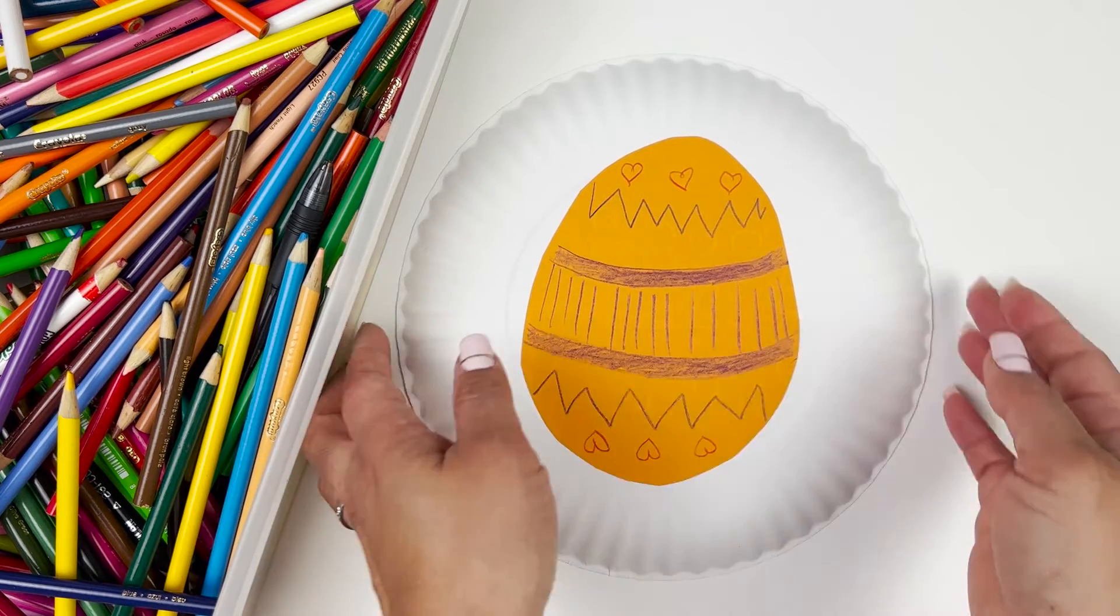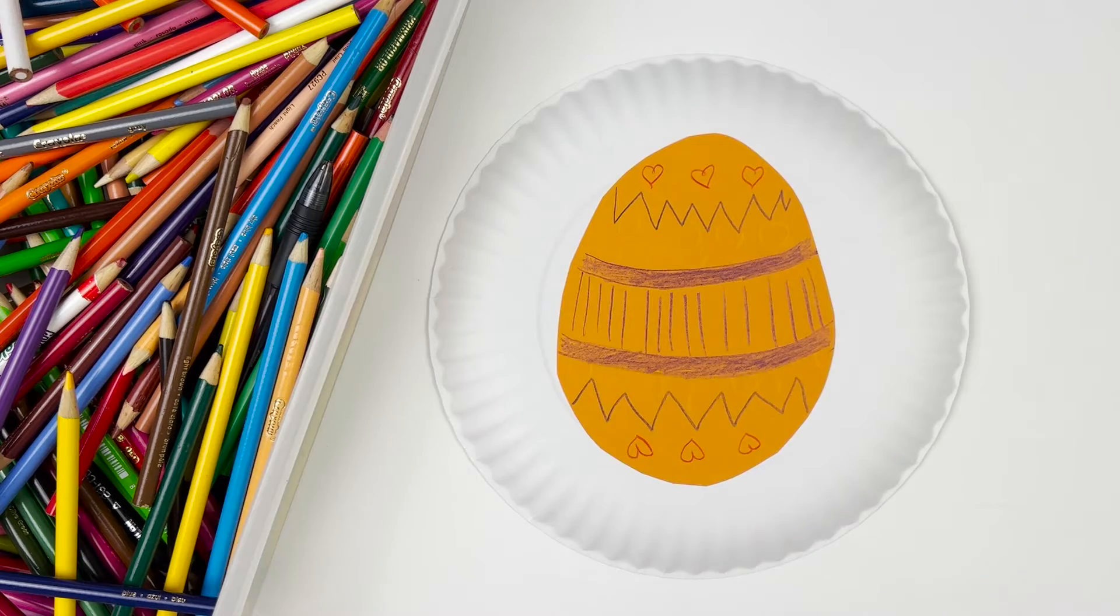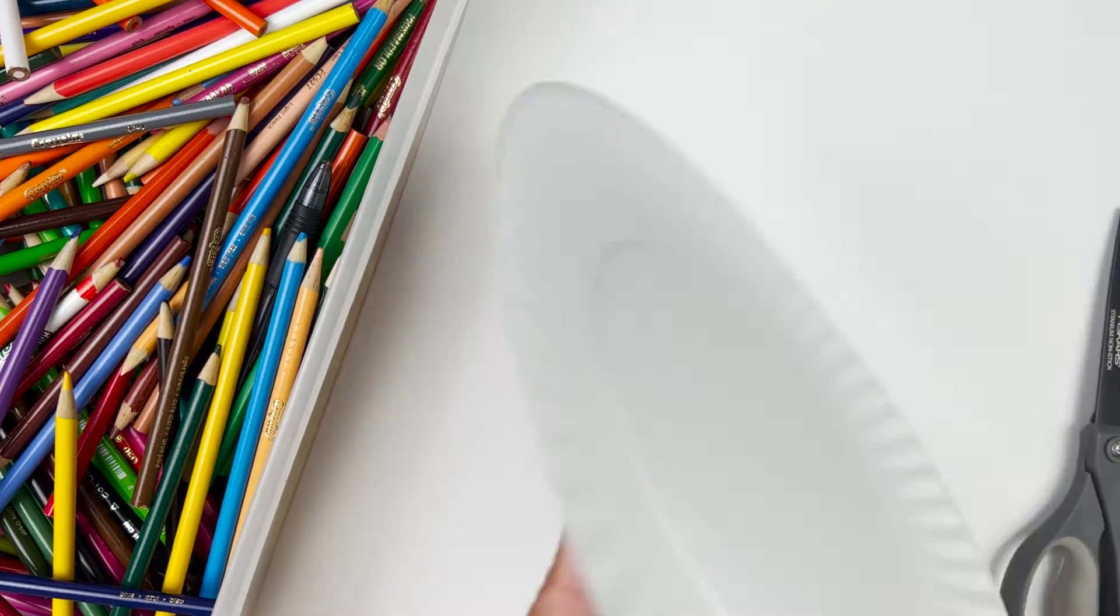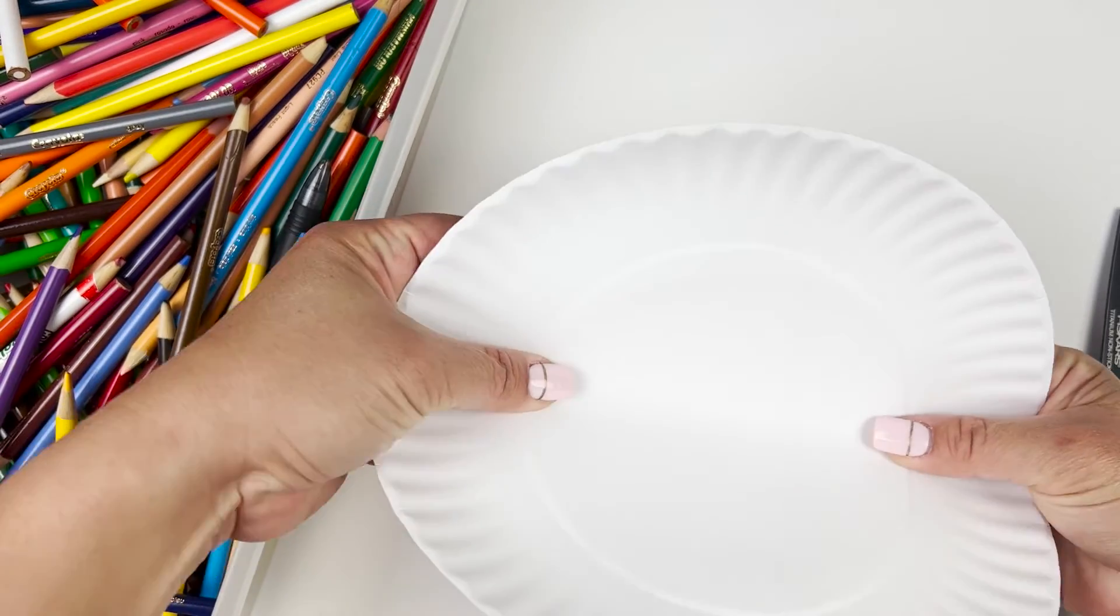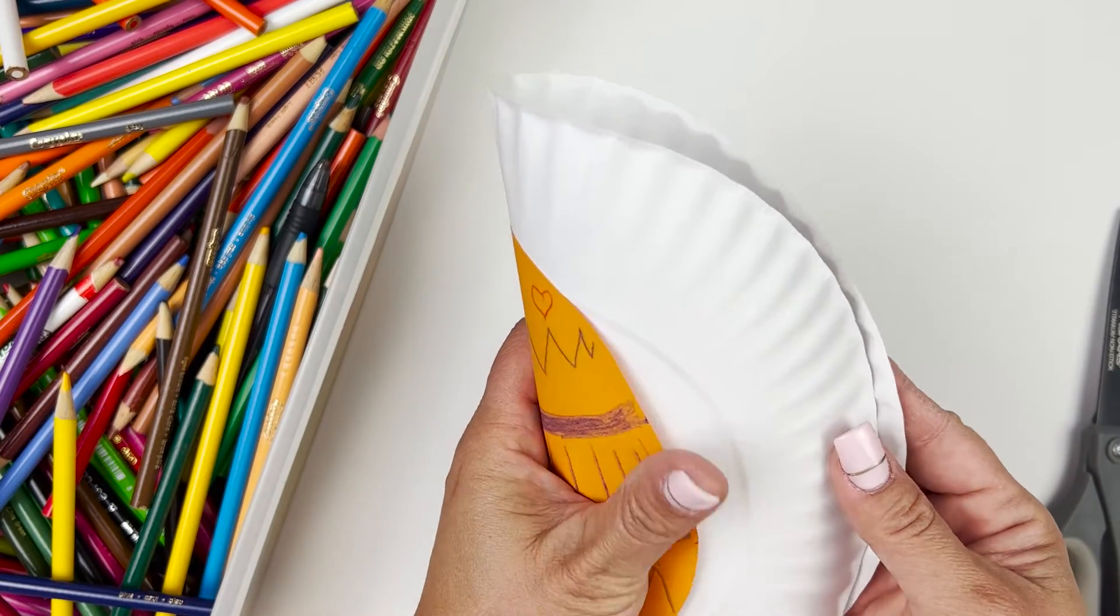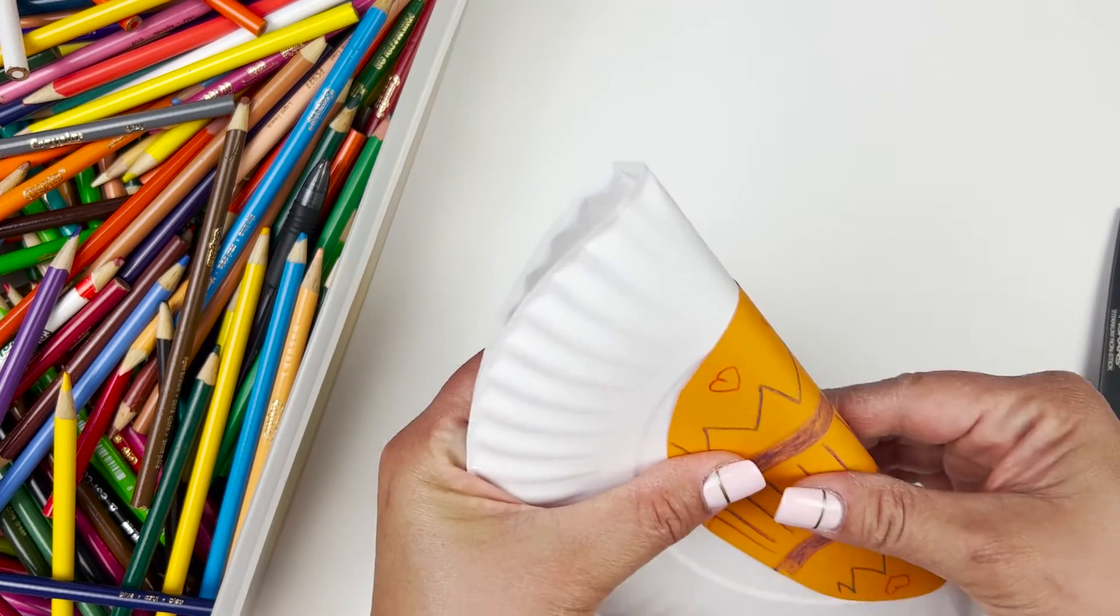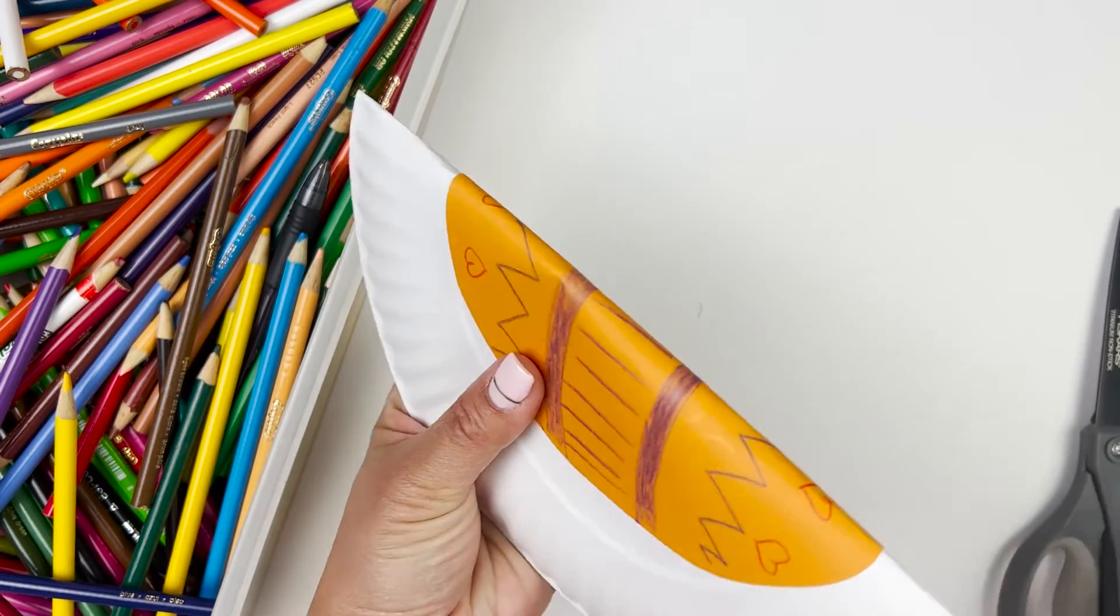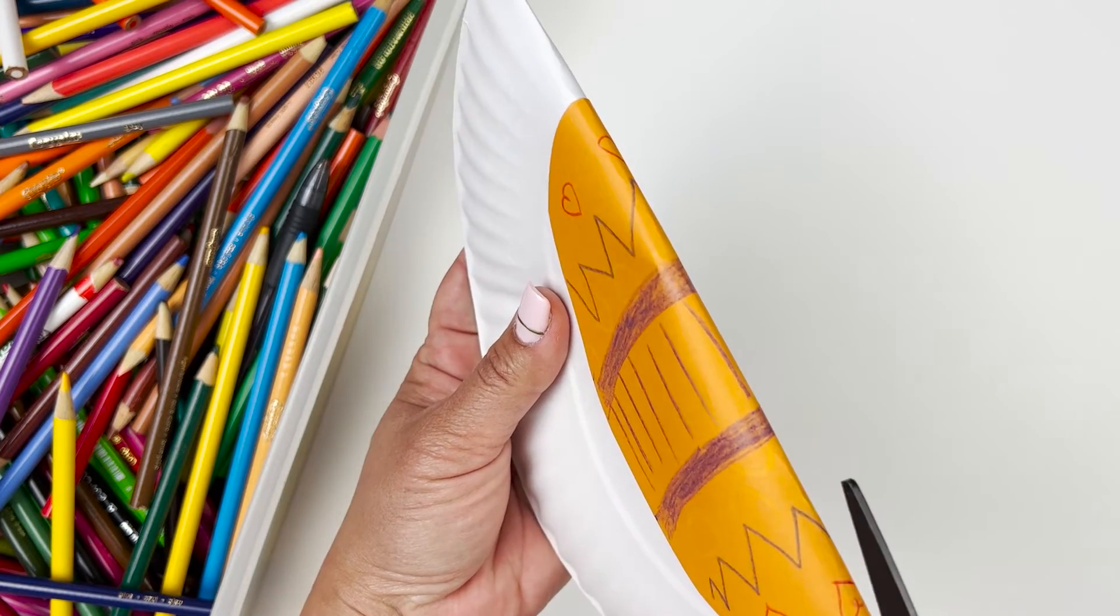Now that we glue that together, we're going to take our scissors and the easiest way is to fold it in half where the egg is. And we're going to get an idea of where the center of our plate is. And that is where we cut it. We're going to take our scissors and you cut the fold.